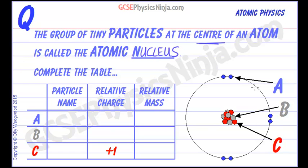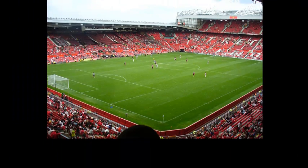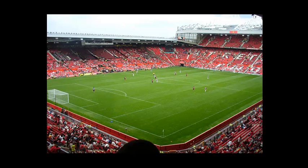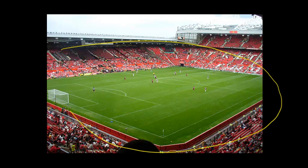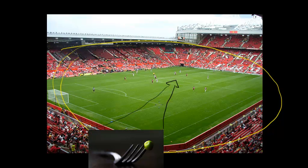To give you an idea of the scale of an atom: if an atom were to be the same size as a football stadium, we'd have the electrons orbiting around the outer stands in shells or clouds. The central nucleus would be the size of a pea at the centre of the football pitch.